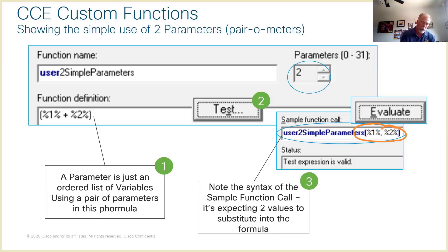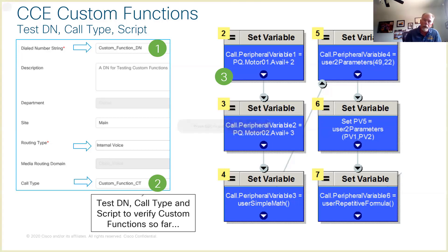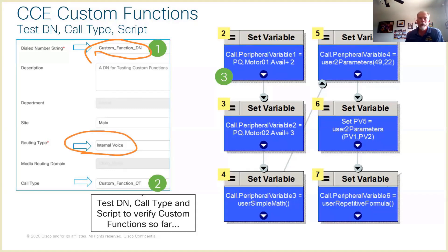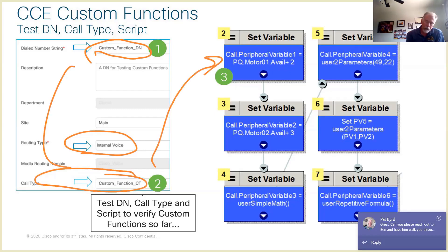When you do an evaluate on the two-parameter function, it throws in '%1%,%2%' in brackets — indicating the custom function expects you to plug some kind of value into those two comma-separated parameters. That's what gets used in the formula. To test all this within scripting, I created a bogus dialed number and a bogus call type in SPOG. The dialed number string is named 'custom_function_DN' with routing type set to internal voice, which is convenient for Call Tracer.